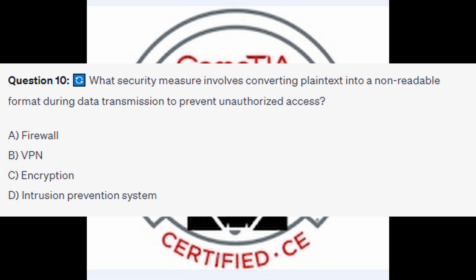Question number 10: What security measure involves converting plain text into a non-readable format during data transmission to prevent unauthorized access? Is it A Firewall, is it B VPN, is it C Encryption, or is it D Intrusion Prevention System?